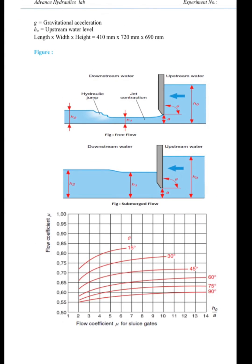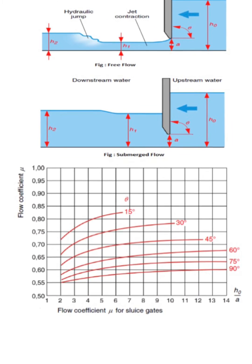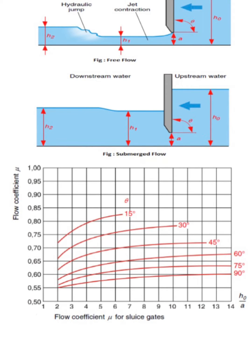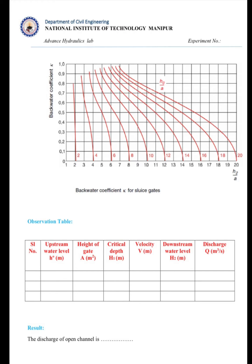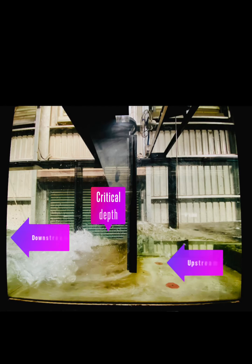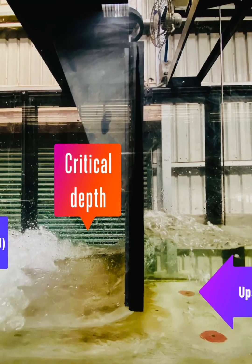With this graph, we can find the value for μ, the flow coefficient, which depends on h₀/a and θ values. For submerged flow, we have another coefficient called κ, the backwater coefficient. For finding that coefficient, we will refer to this graph.